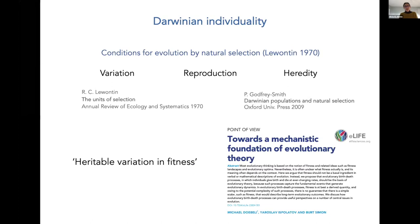A response that encompasses these two problems is that of Darwinian individuality. Darwinian individuals are those entities identified as units by the fact that they undergo a process of evolution by natural selection. In this way, we respond both to the question of how do they evolve and what they are. The point is to identify which entities satisfy the conditions for this to happen — the three conditions identified in 1970: variation, reproduction, and heredity — considered the necessary conditions for evolution by natural selection and therefore for a unit to be a Darwinian individual.